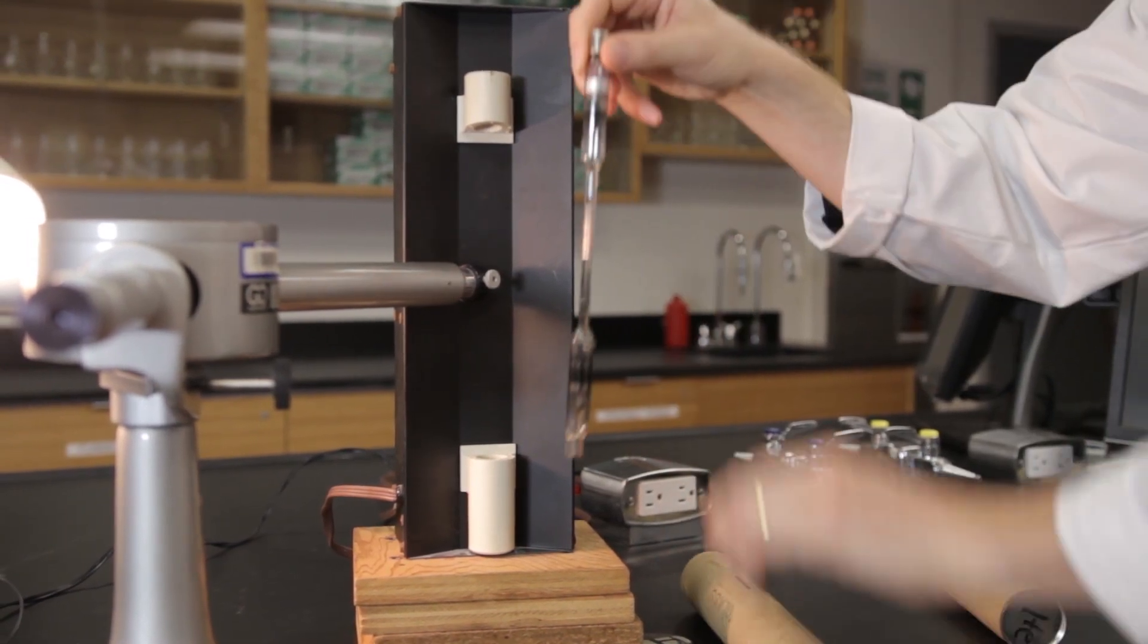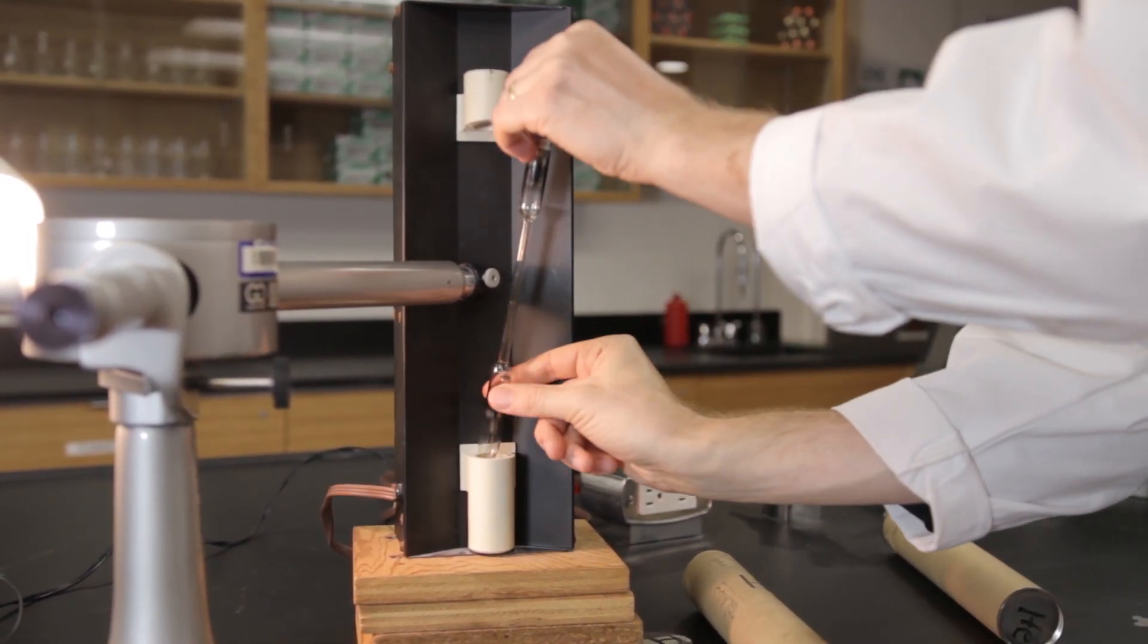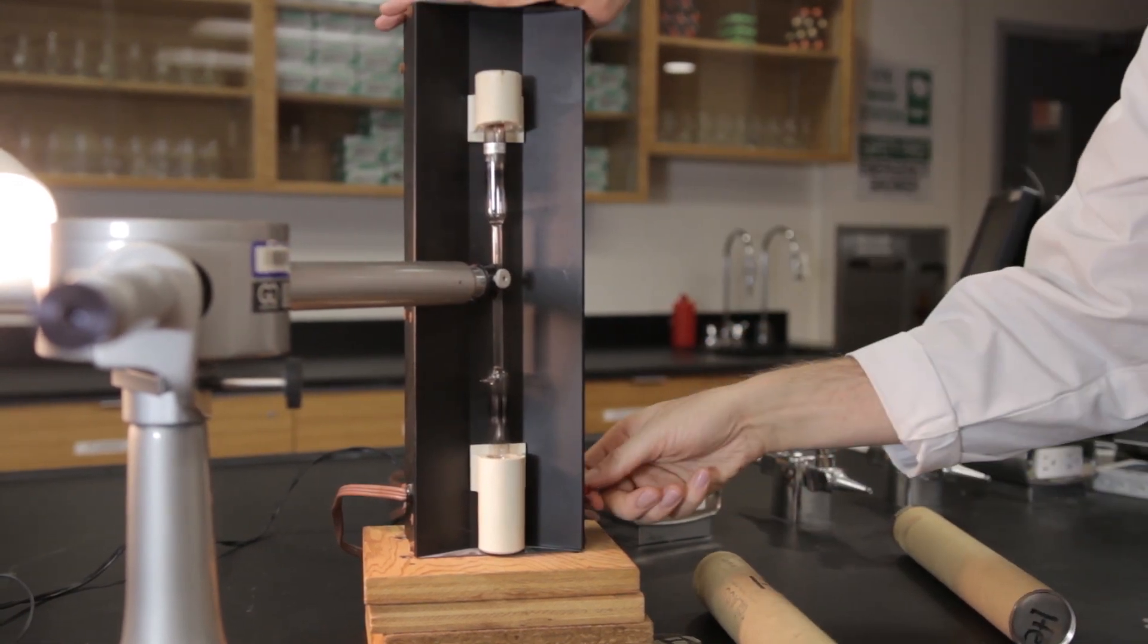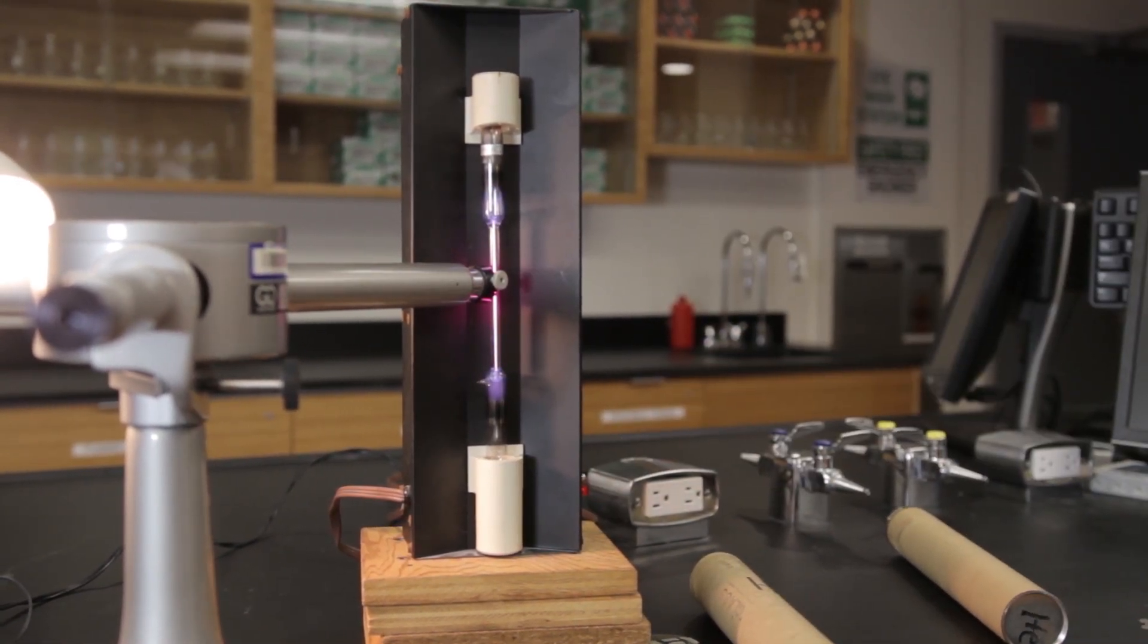Replace the helium discharge tube with a hydrogen tube. Repeat the previous steps to observe the spectral lines of the hydrogen atom. Record the scale readings on the datasheet.